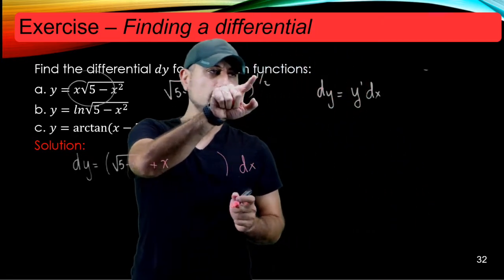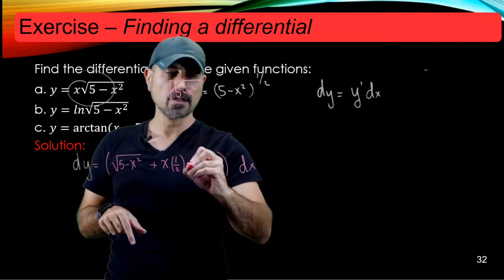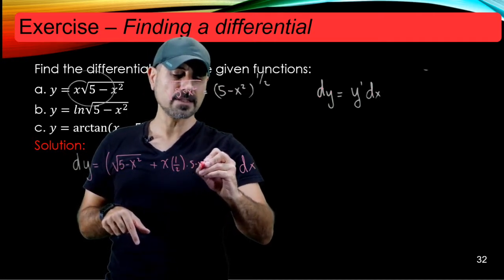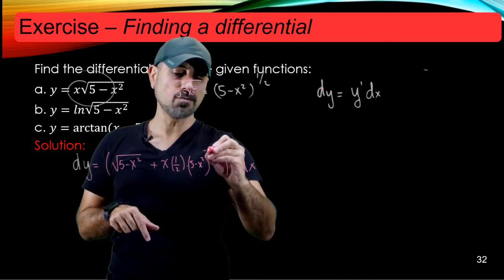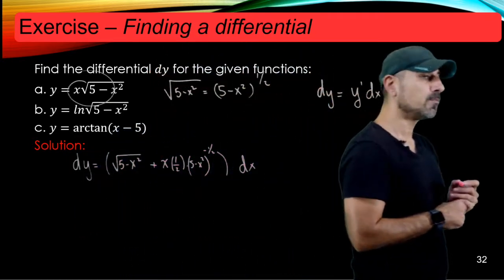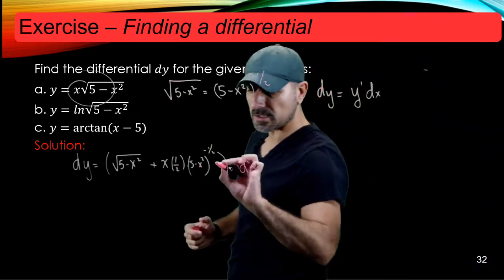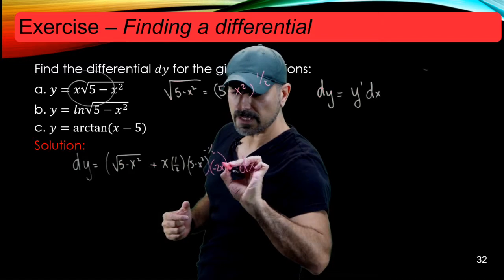Alright, so this exponent goes down here. So 1 half times 5 minus x squared to the power of negative 1 half. And then we're going to multiply this quantity by the derivative of the inner function which is negative 2x.